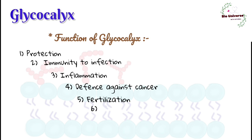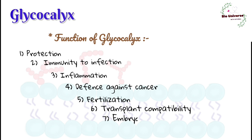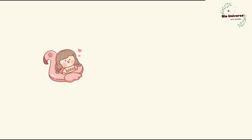Five, it allows the sperm to identify and adhere to eggs. Six, it forms the basis for compatibility of blood transfusions, tissue grafts, and organ transplants. Seven, it guides embryonic cells to their targets in the body. Eight, it helps hold cells together so that tissue cells do not fall apart.